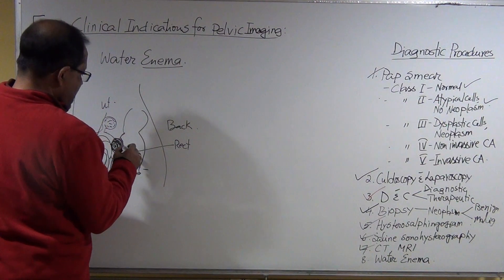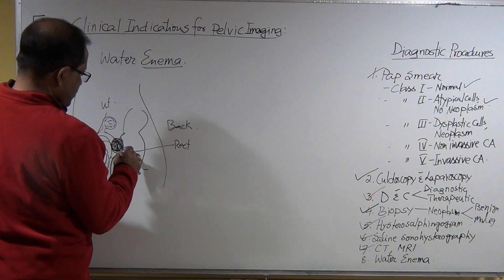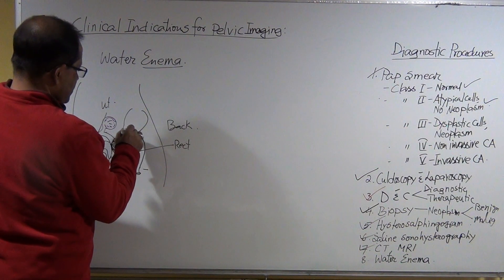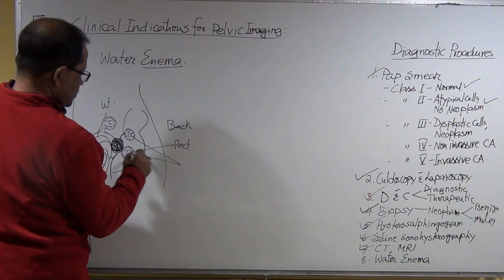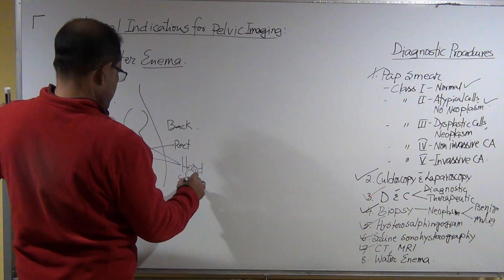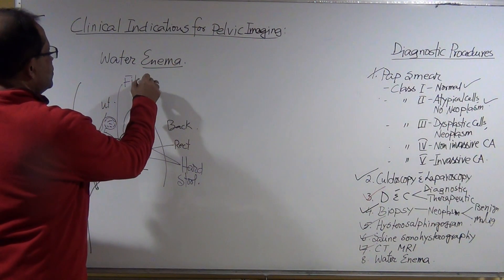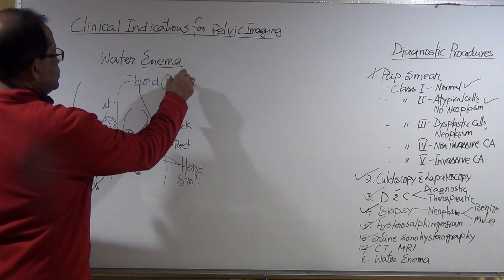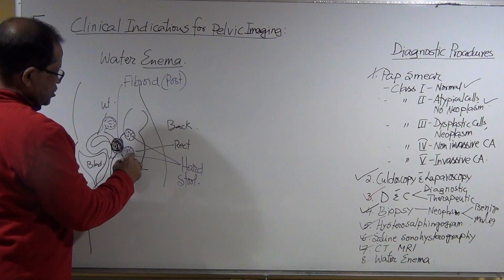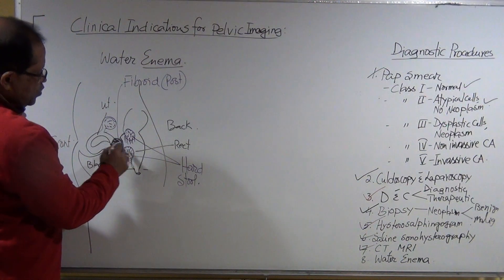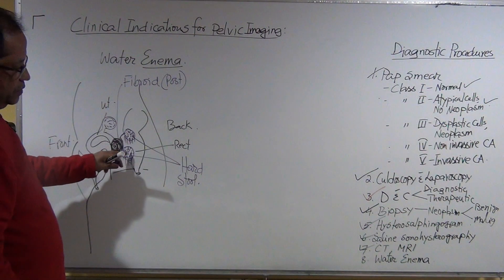The patient may also have hard stool inside the rectum, and this is a fibroid posteriorly. Sonographically, you can see both are producing shadow and both look heterogeneous and complex. So how can you rule out that this mass is not a fibroid?